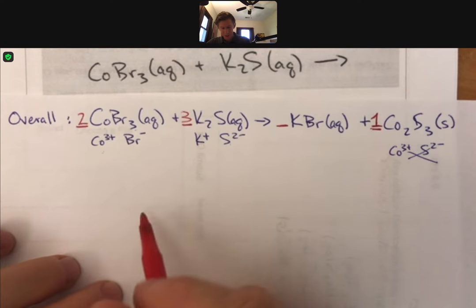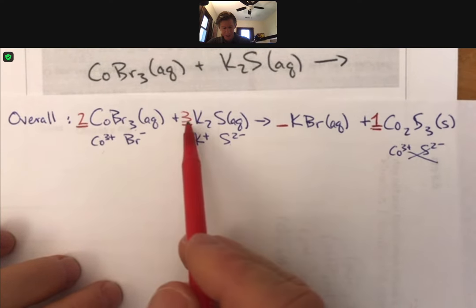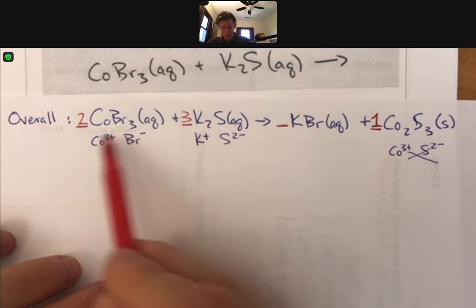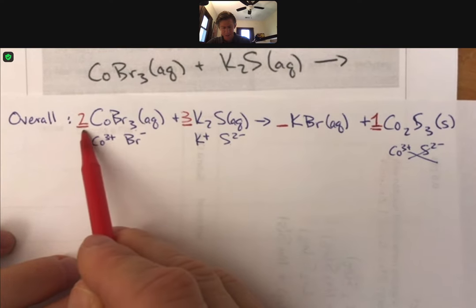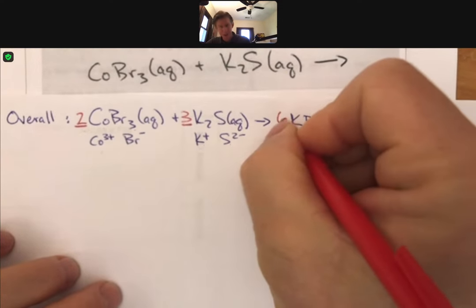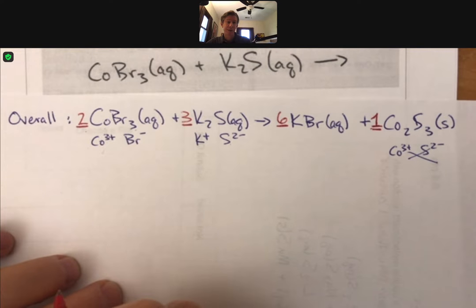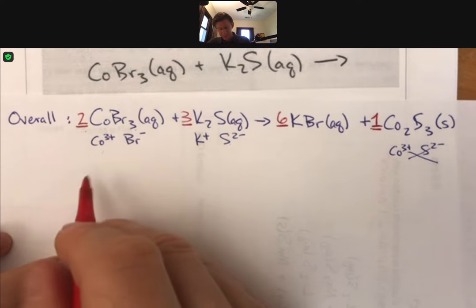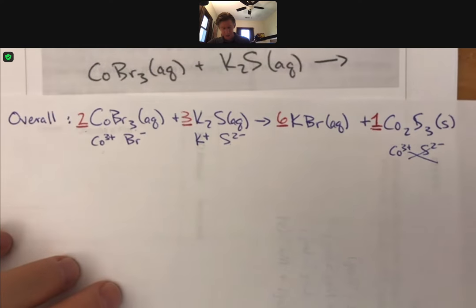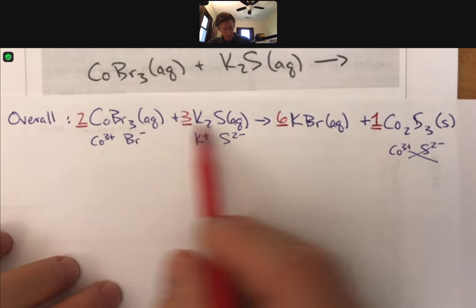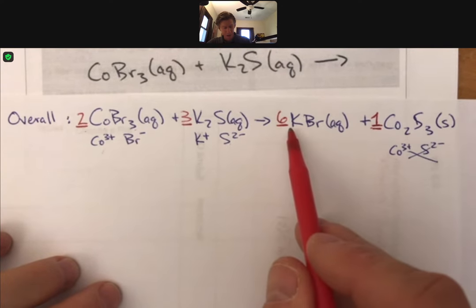And then in my perfect world, I have six potassiums and six bromides. So I need a six right there. That is now balanced. You can double check things. And you'll find out that it's okay. Now, and that is our overall reaction with all the formulas, good formulas, with all the phases.